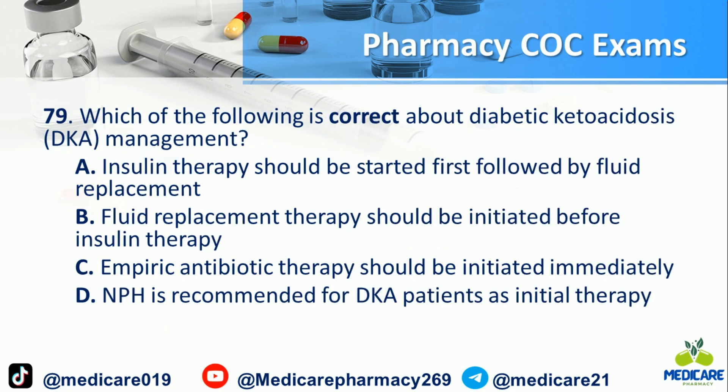Number 79: Which of the following is correct about diabetic ketoacidosis (DKA) management? a. Insulin therapy should be started first, followed by fluid replacement. b. Fluid replacement therapy should be initiated before insulin therapy. c. Empiric antibiotic therapy should be initiated immediately. d. NaHCO3 is recommended for DKA patients as initial therapy. The answer is B.